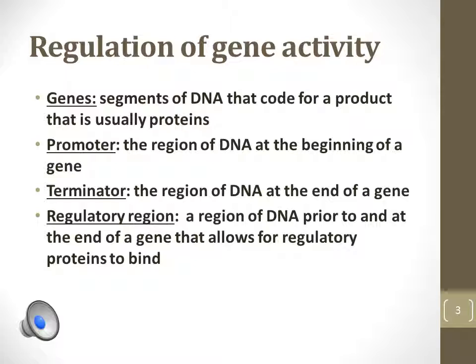Terminator is the region of DNA downstream from the gene that stops mRNA transcription by releasing the RNA polymerase enzyme. The regulatory region is also upstream from a gene and helps control how much of a gene is expressed. This is due to methylation of the regulatory region, which inhibits gene expression.